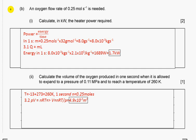An oxygen flow rate of 0.25 moles per second is needed. Calculate in kilowatts the heater power required. Power equals energy over time. In one second we have so much kilograms, so energy equals mass times latent heat. Latent heat is given, so in one second we need so much energy. We use two significant figures.